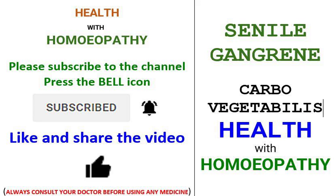Hematuria. Useful in the effects of sexual excesses. Varicose veins in female sexual organs, with hemorrhages. Menorrhagia, passive flow. Menstruation too early — profuse, thick, corrosive, offensive — preceded by violent itching. Corrosive leucorrhea.